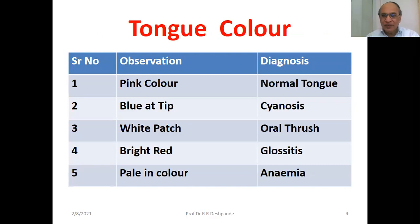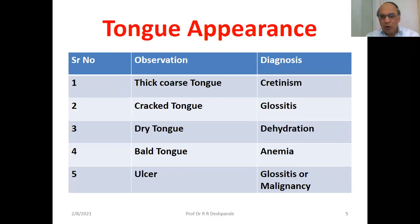Blue at the tip indicates less oxygenation of the body, that is cyanosis. A white patch indicates oral thrush. Bright red color of the tongue indicates glossitis, or inflammation of the tongue. Pale color indicates anemia, that is low hemoglobin.